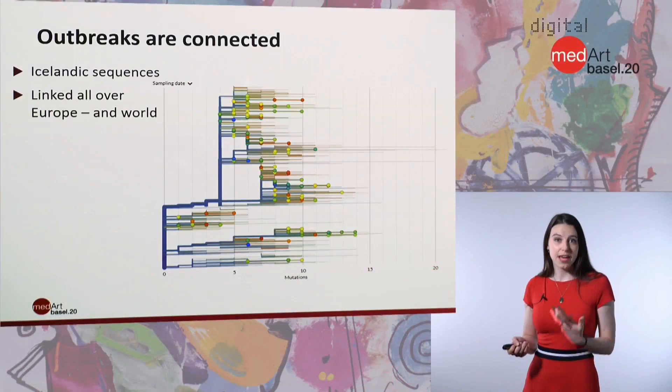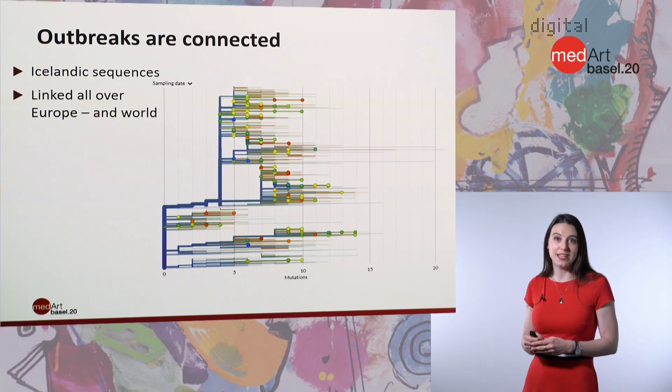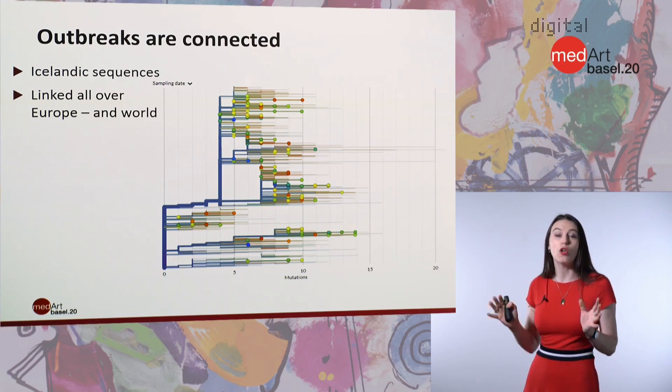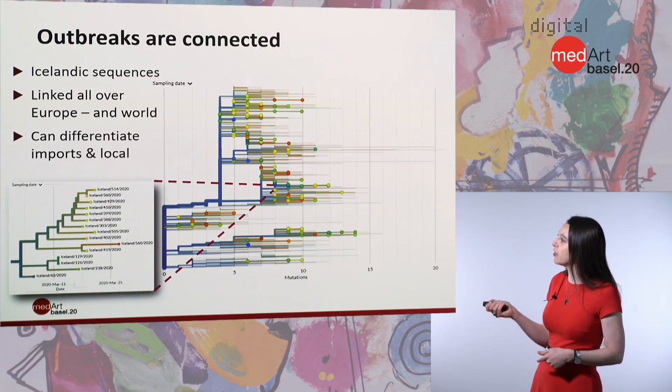Iceland has been really good about testing, sampling, and sequencing their population, so they have a large number of samples. Here, the Icelandic samples are plotted as dots, and the rest of the tree is shown as lines. The immediate thing we can see is that the Icelandic samples fall across the tree — they connect with sequences from all over the world, particularly in Europe. This shows that Iceland has had many introductions of SARS-CoV-2, both from Icelandic people traveling and from people coming to Iceland from other countries. However, we can zoom in and find clades made completely of Icelandic samples, showing instances where imports started to spread through local transmission.